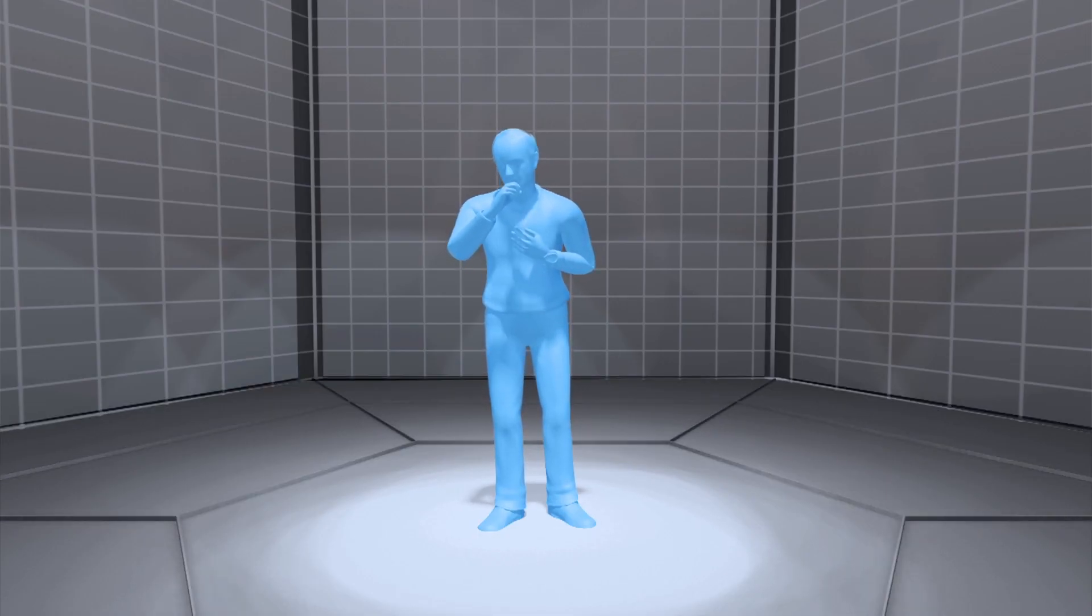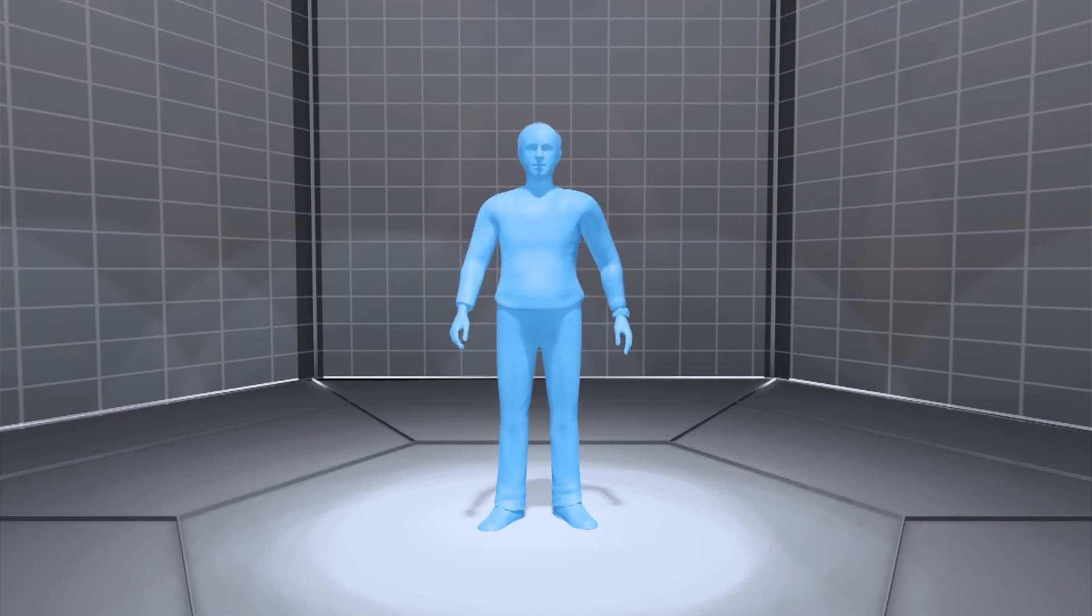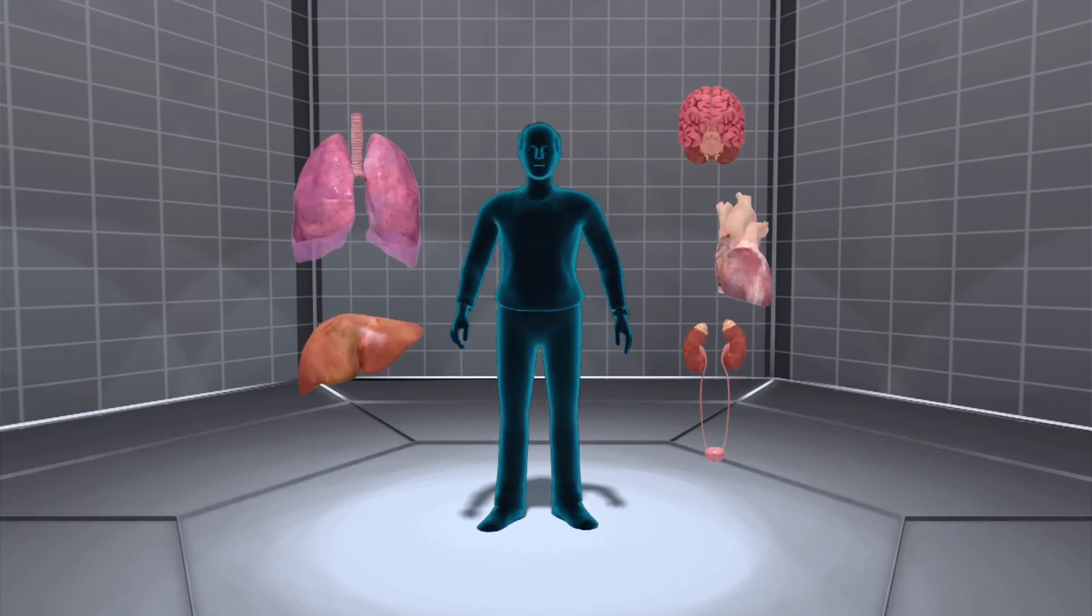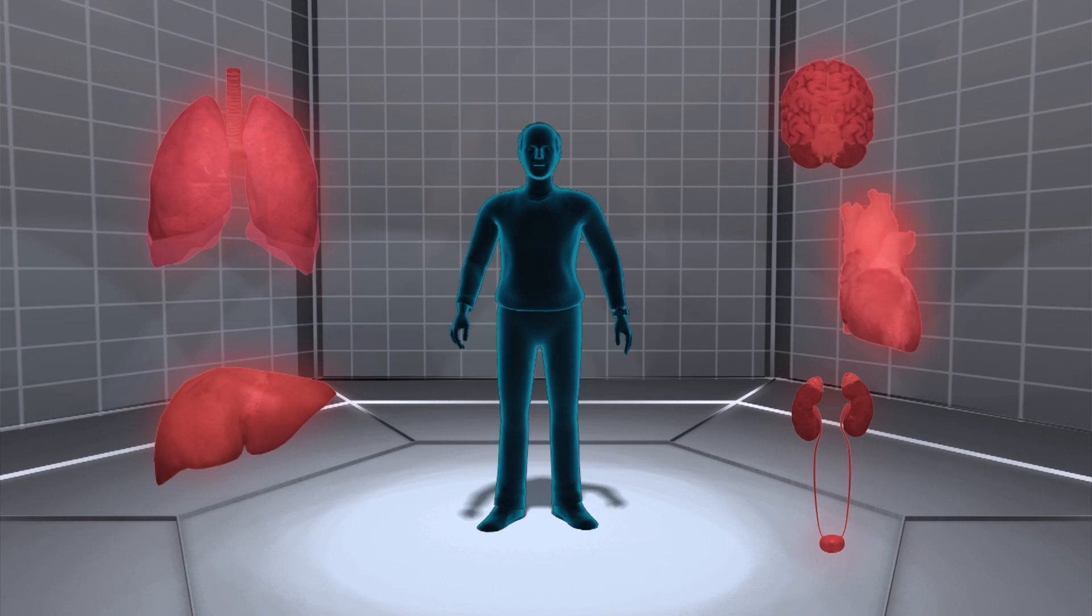With sepsis, the flu triggers the release of chemicals into the blood to fight infection, which in turn causes inflammation throughout the body. That inflammation can then trigger multiple organ system failure.